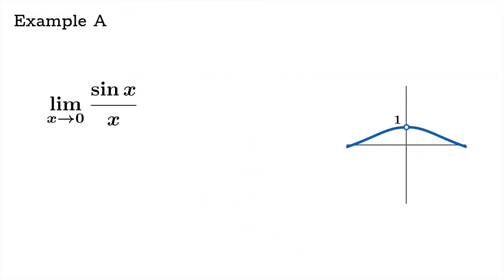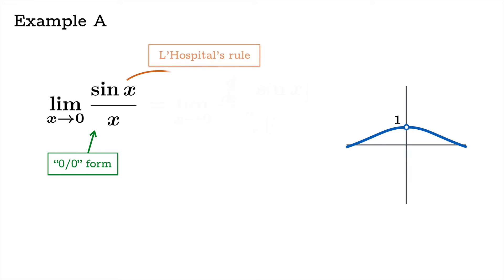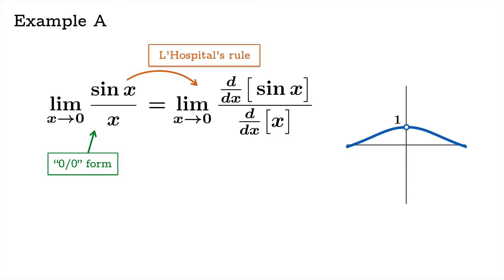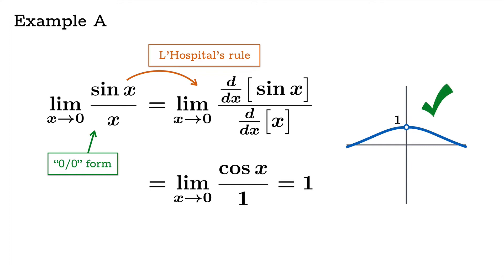Let's revisit the three examples in light of L'Hôpital's rule. For sin(x)/x, this is a zero over zero form, so L'Hôpital's rule applies. We take the derivative of the numerator and denominator and assemble them into a new limit, which can easily be evaluated using limit laws because the limiting value of cosine as x approaches zero is one. So the limiting value is one, matching what we saw previously.